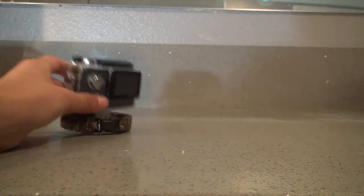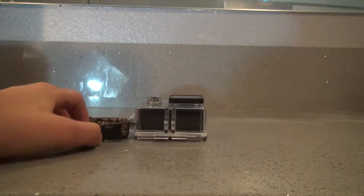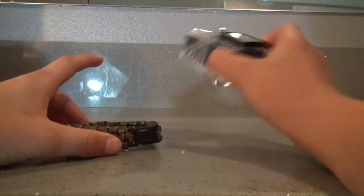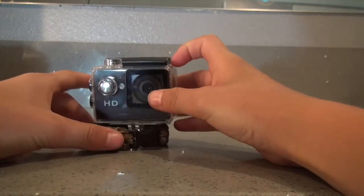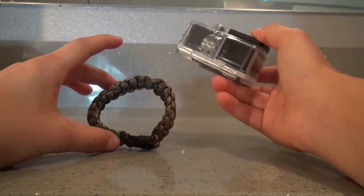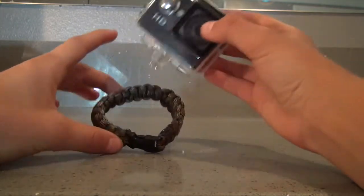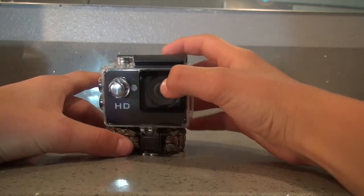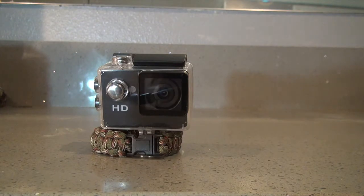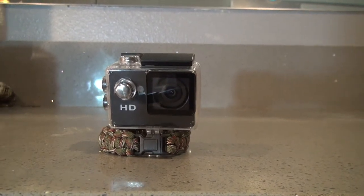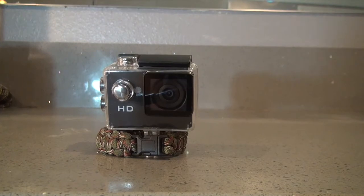For this life hack we're gonna make your GoPro stand up like this instead of falling. You're gonna need a bracelet and a GoPro or action camera. I have an action camera because I'm a cheap person. You just put your action camera or GoPro in the bracelet so it doesn't fall down. Super simple, and you can adjust it however you want. That's our first life hack.